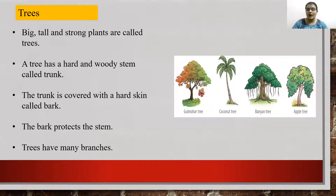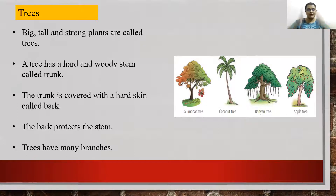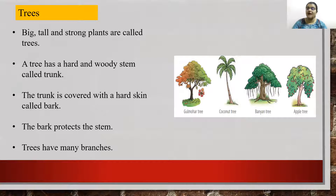Big, tall and strong plants are called trees. They have a very hard and woody stem called a trunk. This trunk is also covered with a hard skin called bark, which is brown in color. It protects the stem. Trees have many branches, they bear fruits and flowers too, and even trees can live for 100 years.